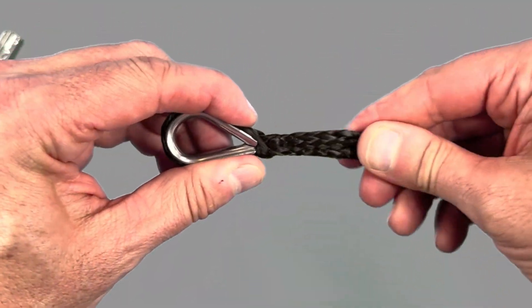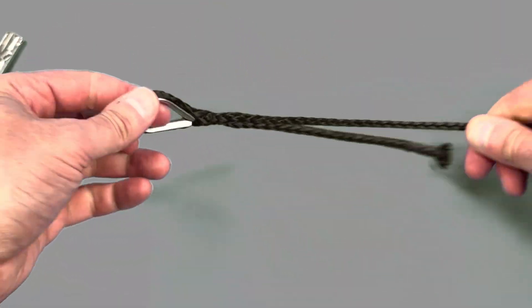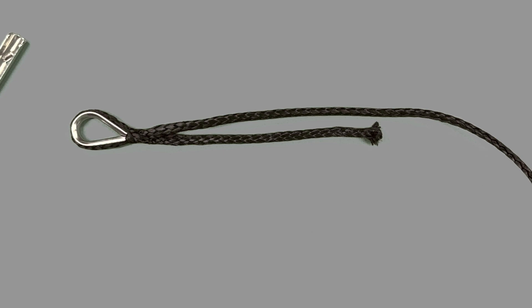So there you've almost completed the splice. We've got it locked in. The thimble's tight. Normalize both the standing and working ends.